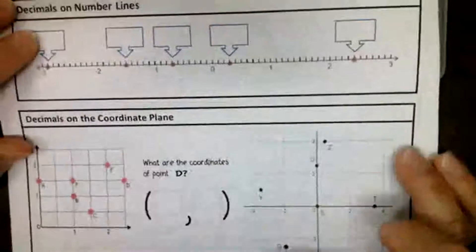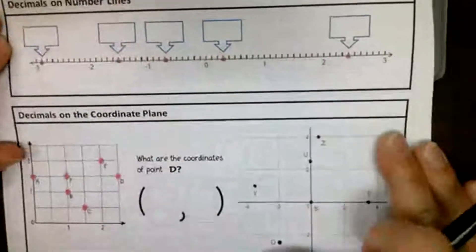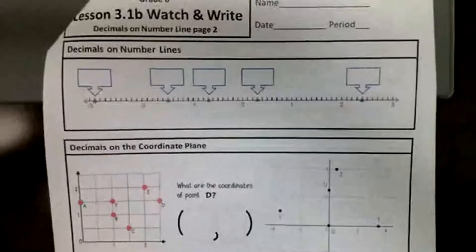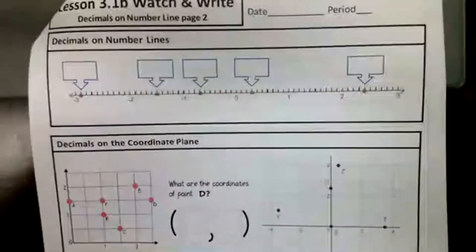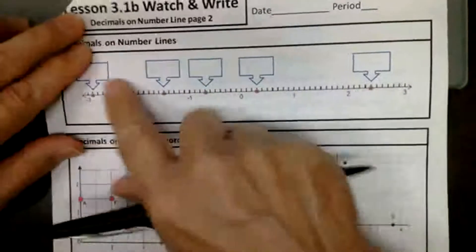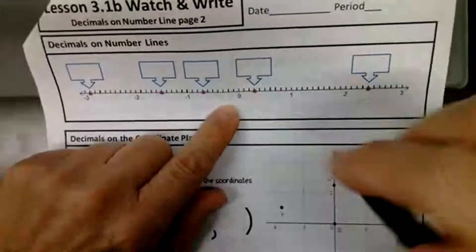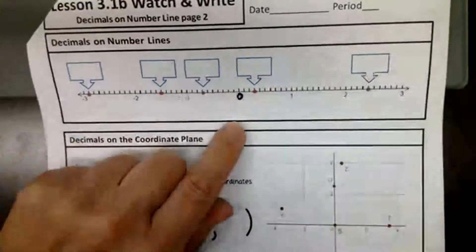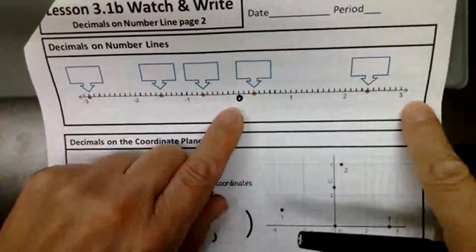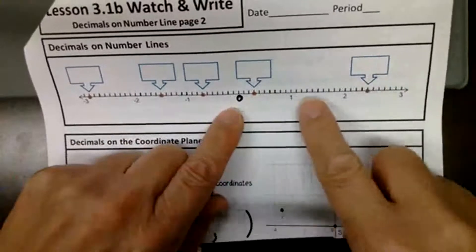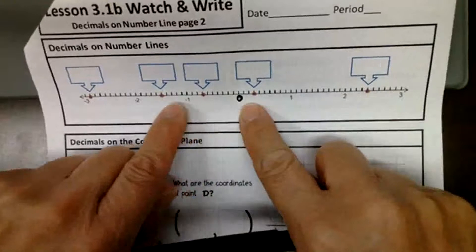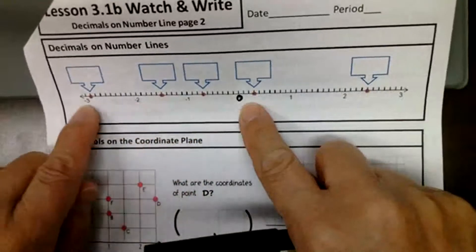Let's put decimals on number lines and on coordinate planes now. This is negative, so here's zero — I'm going to mark that really clearly. There is zero. The positive numbers are going this way: one, two, three. And the negatives are going this way: negative one, negative two, negative three.